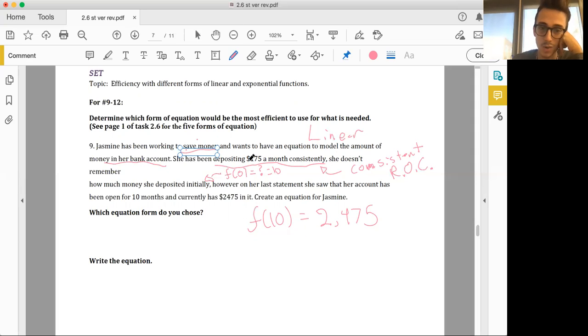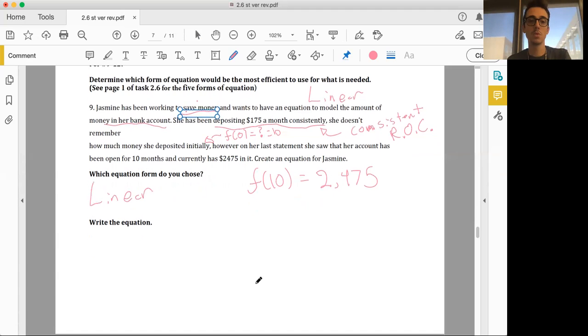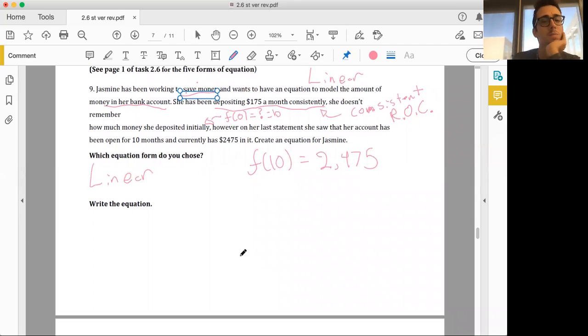So this is saying that over the span of 10 months, we accrue this amount. We don't know f(0). So I'll make that. What linear form are we choosing? We're choosing linear. Or do we need it? What do you think? We can actually just get away with point-slope. Let me tell you why. We have an x-coordinate in it, we have a y-coordinate in it. We know our slope, our consistent rate of change, which is just m.